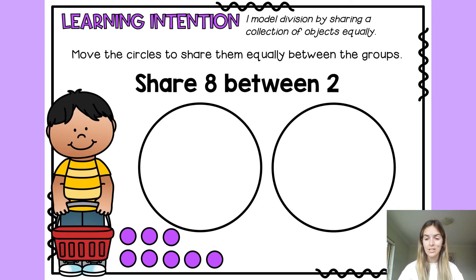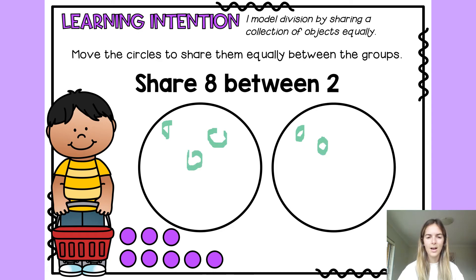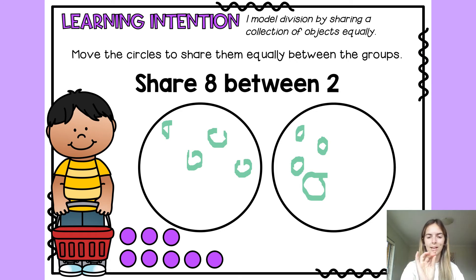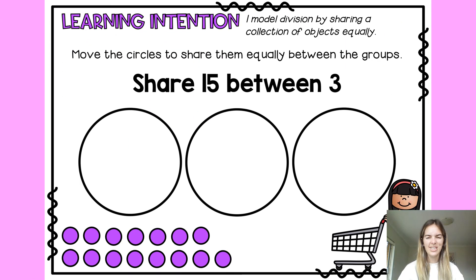Share 8 between two — pause the video and do this one on your own, then come back. I've got my two groups and I'm sharing eight: one, two, three, four, five, six, seven, eight. I can see straight away without counting individually that there's four on one plate and four on the other. So sharing eight between two equals four.